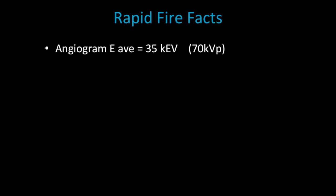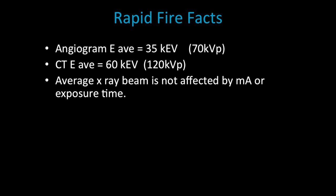For angiograms, our energy average is going to be 35 keV. Remember that our kVp will be usually twice as high as our average energy. Just remember the number of 35 keV for average energy. Our average keV for CT is going to be 60 keV. The average x-ray beam is not affected by mA or exposure time.